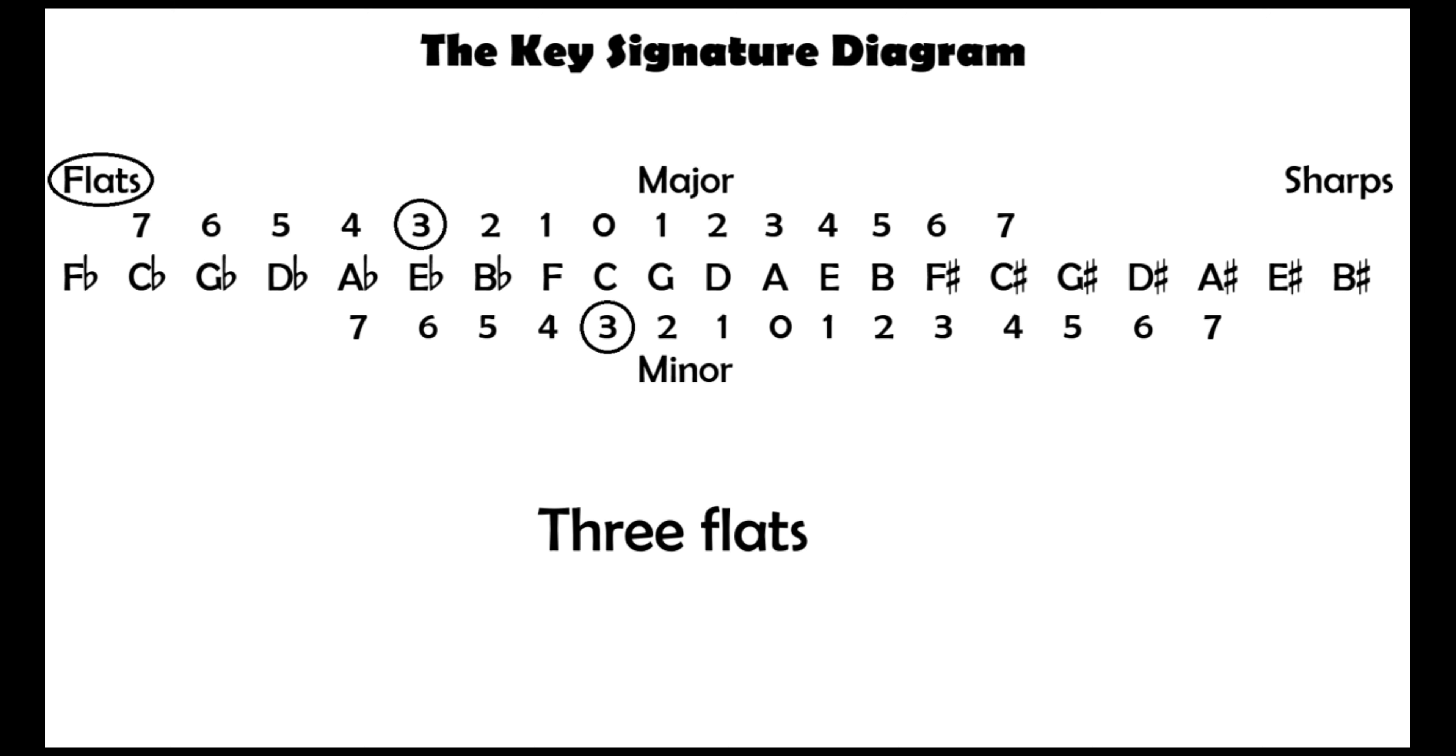As the top row of numbers is for major keys and the bottom row for minor keys, this means that E flat major and C minor both have 3 flats in their key signatures.